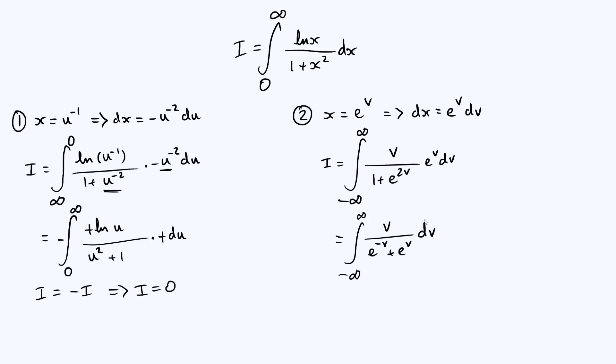Now, we're going to use a symmetry argument. Notice that the integrand, in other words, v over e to the minus v plus e to the v, is an odd function. In other words, if we exchange v with minus v, we get back the same thing but with a minus sign.